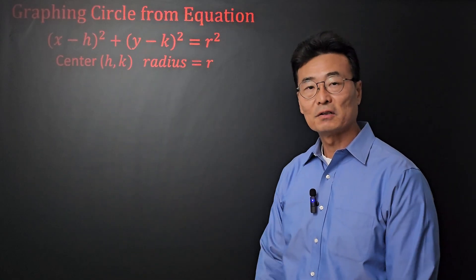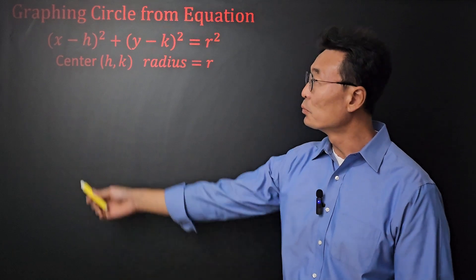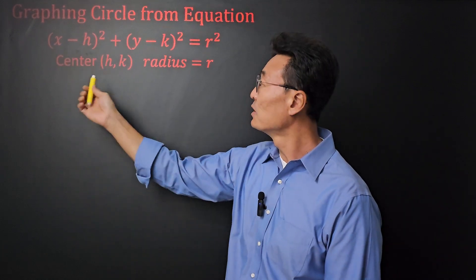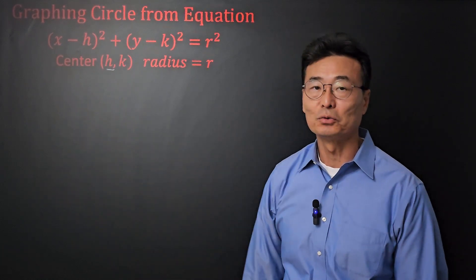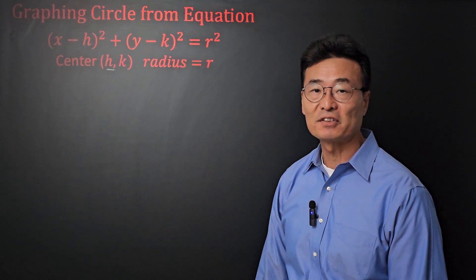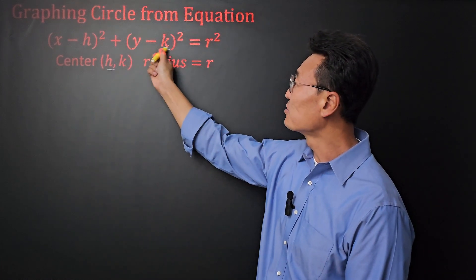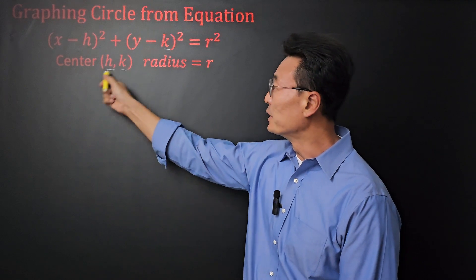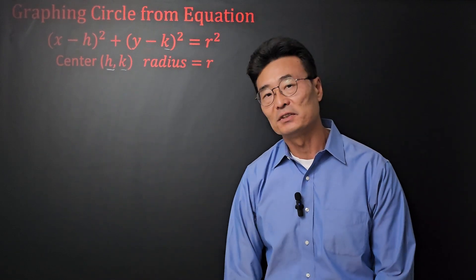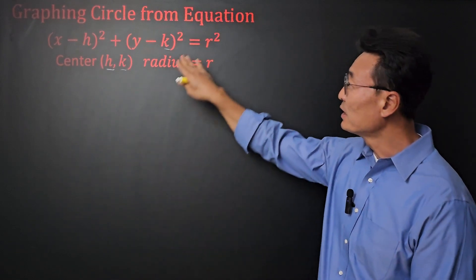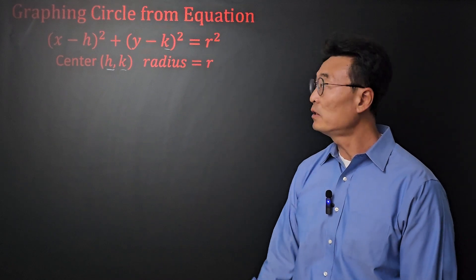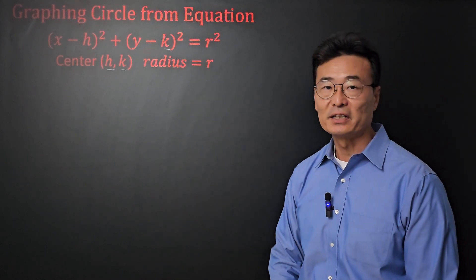Here's the standard equation of a circle. Notice when we have x minus h, that positive h will be the x-coordinate of the center, and y minus k, where k will be the y-coordinate of the center of the circle, and it's always set equal to r squared, where r is the radius.